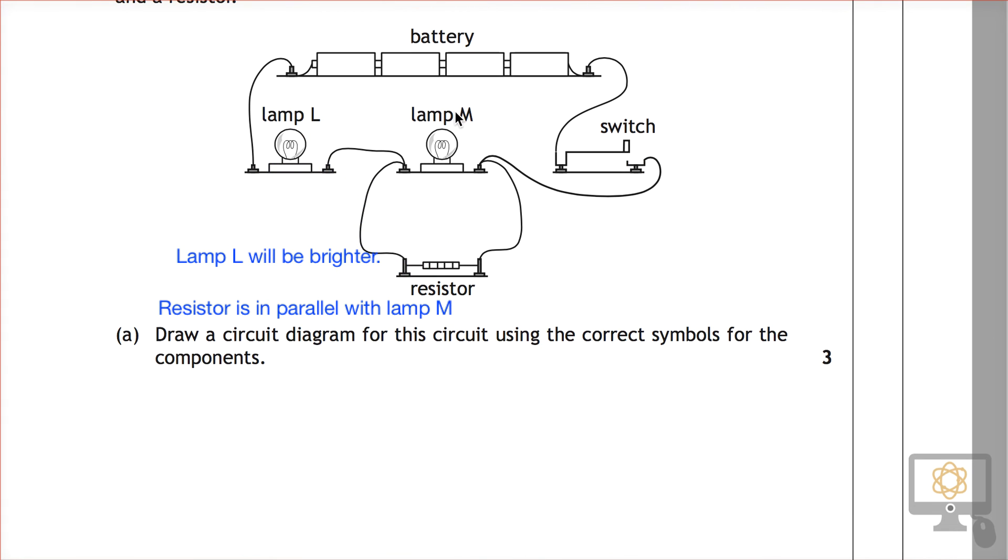The first way we can think about is thinking about what happens to the current. Well, if this current flowing from this battery, let's say it flows in this direction, flows through the switch and reaches here. Well, some of the current is going to travel through the lamp and some of the current is going to travel through the resistor.